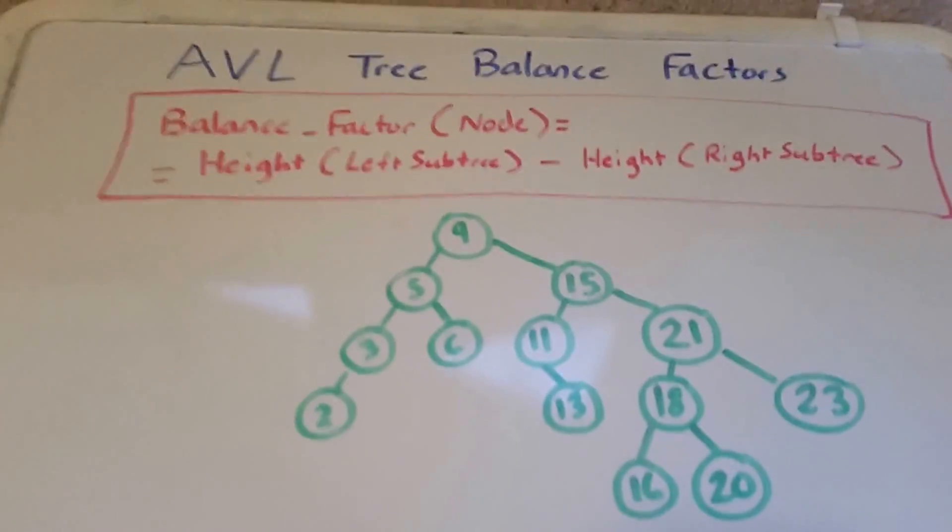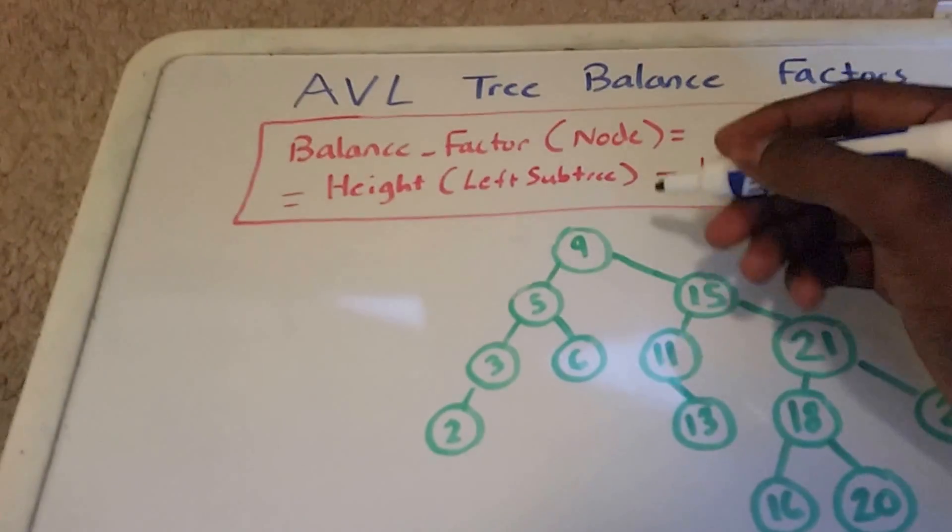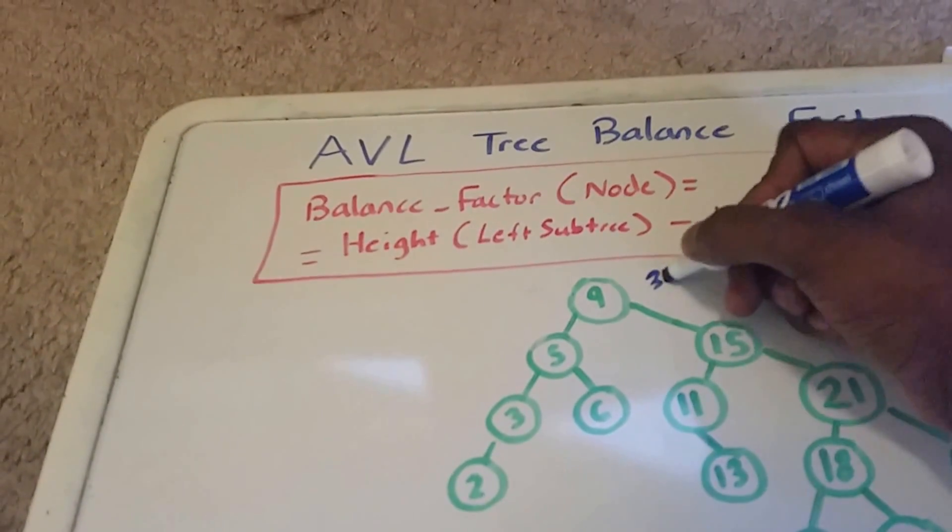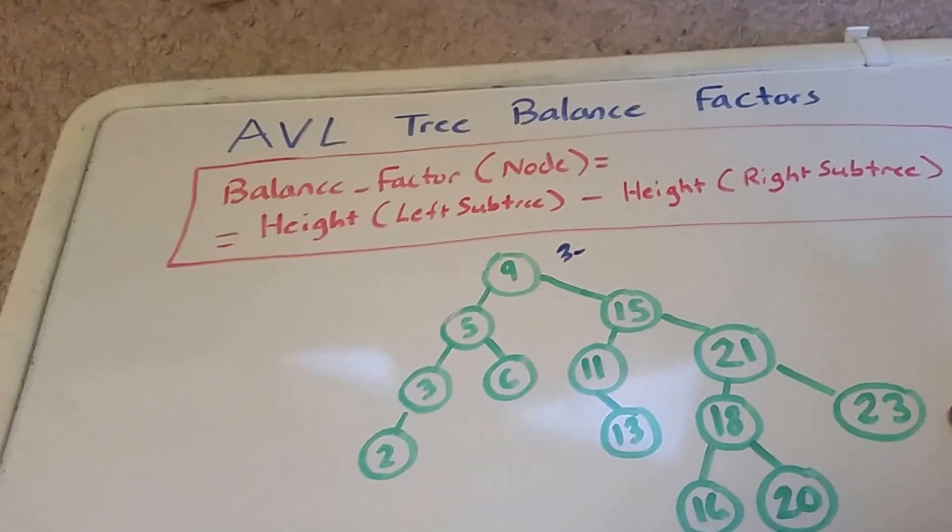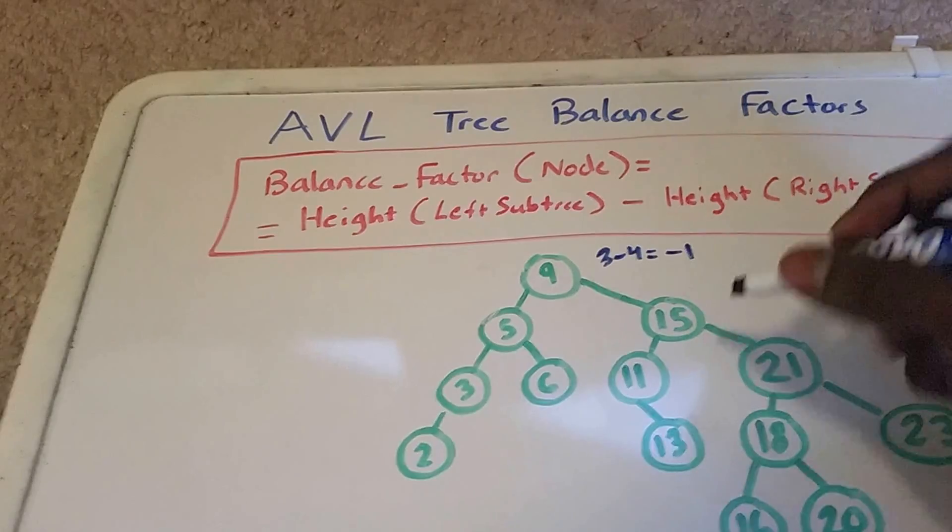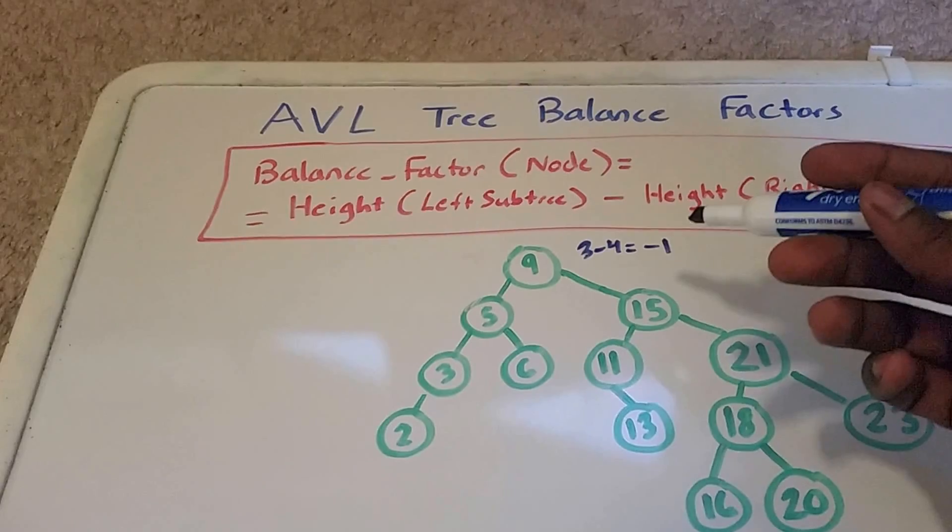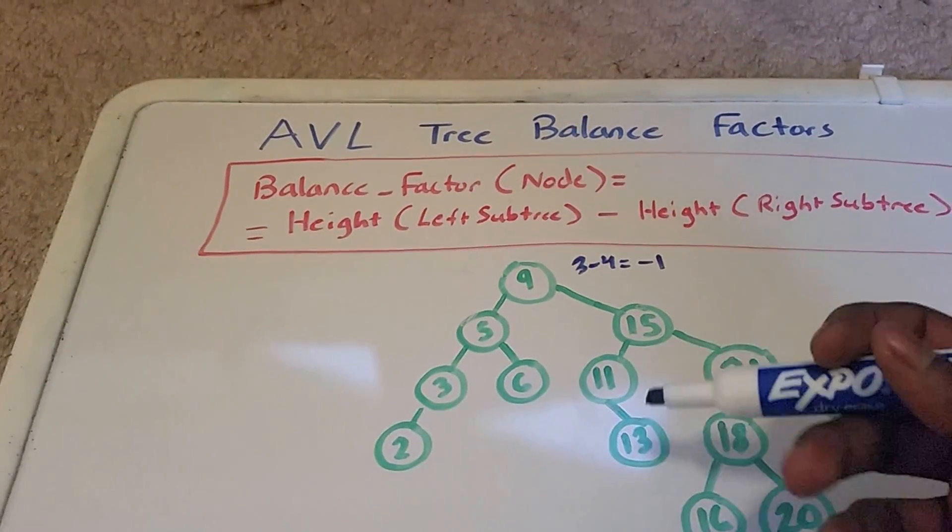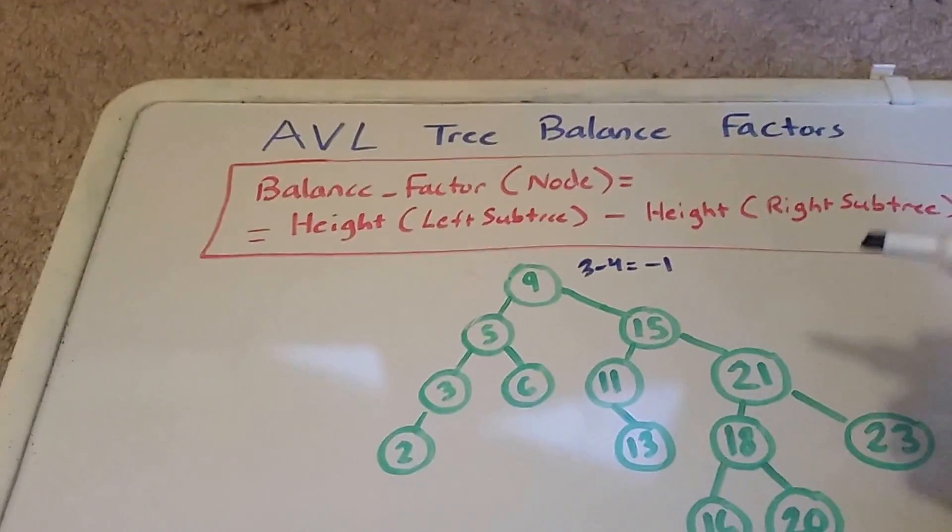Alright. So again, the height of the left subtree is 1, 2, 3. So we have 3 minus the height of the right subtree, which is 1, 2, 3, 4. So 3 minus 4 gives us negative 1. So this node here has a balance factor of negative 1, which is fine, because that means that the height is only at most 1 right now, difference from its two children subtrees.